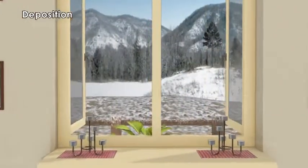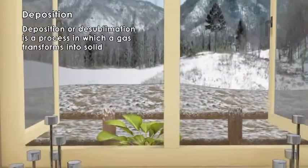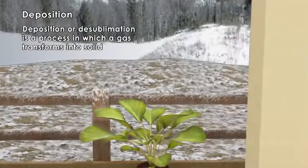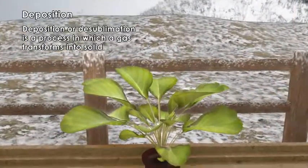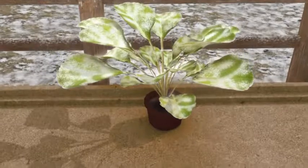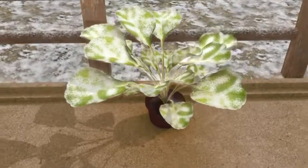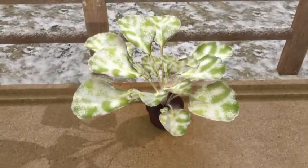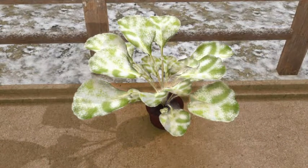Deposition: Deposition or desublimation is the process in which a gas transforms into solid. For example, in the process of frost on leaves, water vapor in the air surrounding the leaf loses thermal energy and changes into a solid.